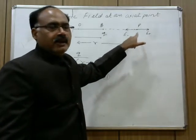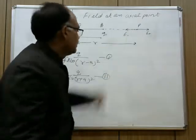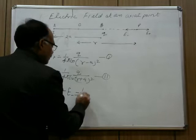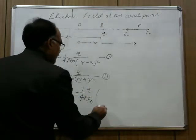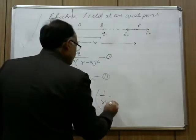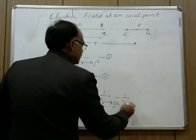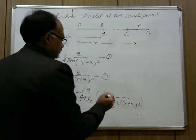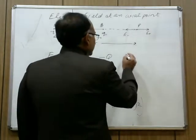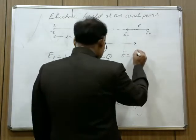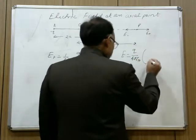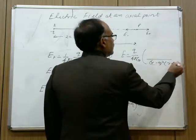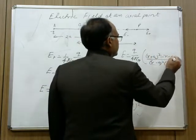Since the two electric fields are anti-parallel, the net electric field E equals E plus minus E minus, which equals 1 upon 4 pi epsilon naught times q, in bracket: 1 upon (r minus a) squared minus 1 upon (r plus a) squared. Taking the LCM, the denominator becomes (r minus a) squared times (r plus a) squared, and the numerator becomes (r plus a) squared minus (r minus a) squared.